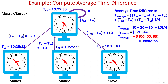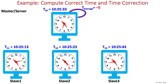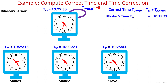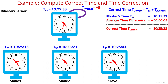In the third and final step, the master computes the correct time and sends an adjustment time to each slave machine to correct and synchronize its time. The correct time equals master's time plus average time difference, where master's time is 10 hours 25 minutes and 33 seconds and average time difference is minus 5 seconds. So the correct time is 10 hours 25 minutes and 28 seconds, which will be the correct time of the network and master.